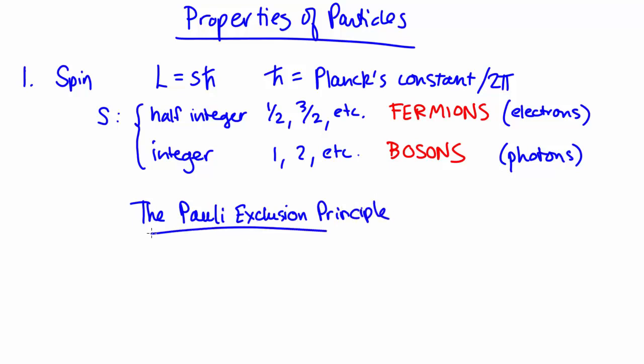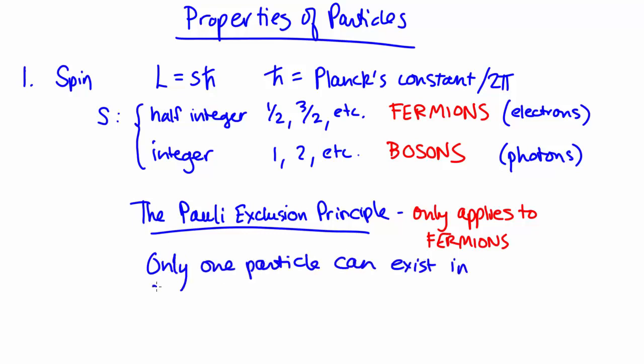What this principle says is that only one particle can sit in a particular quantum state at a time. Fermions have to obey this rule. Bosons don't have to.